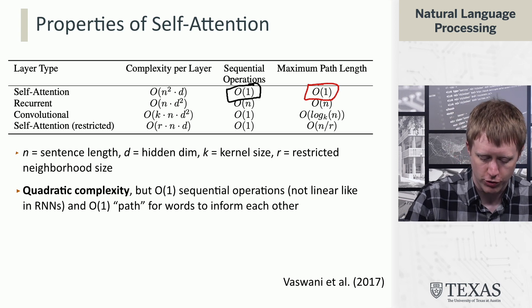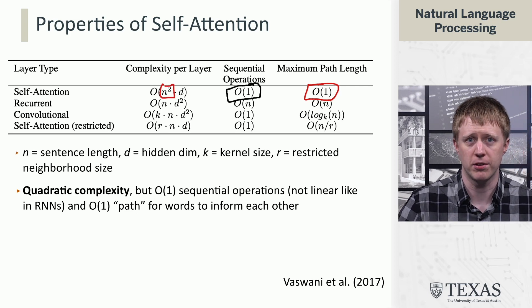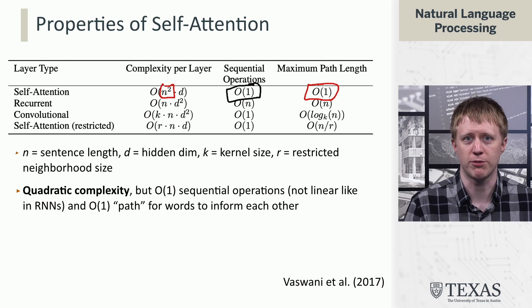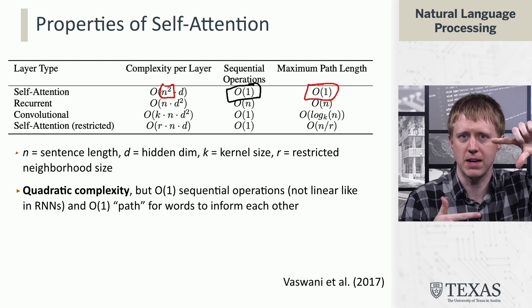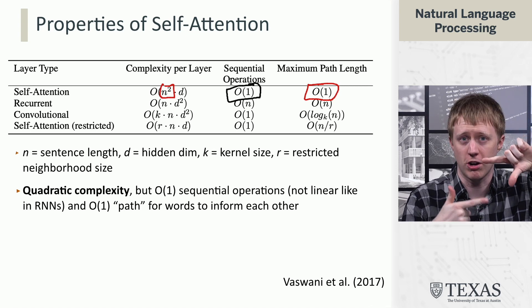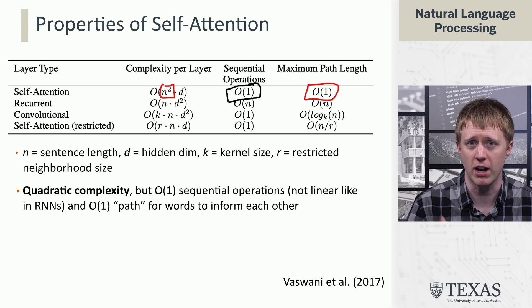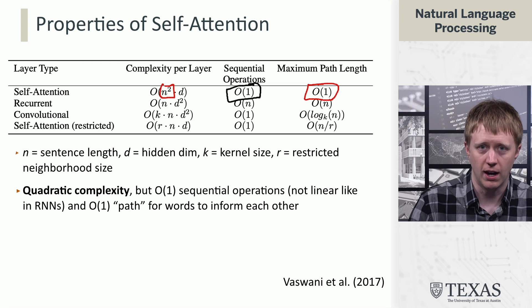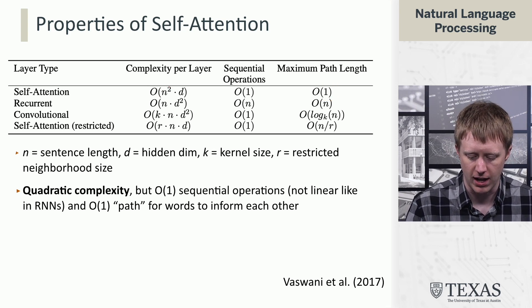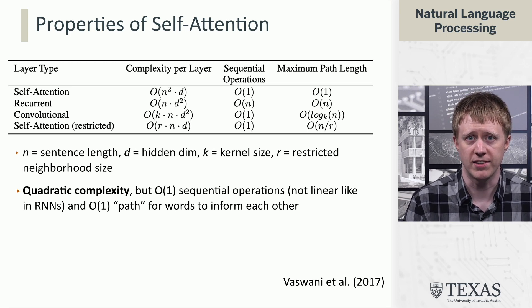That said, the big drawback of self-attention as it's presented here is this n-squared complexity. We have to form this attention matrix that's sequence length by sequence length. That's going to be big, hard to store, a lot of memory. There's a lot of subsequent work that's tried to make this better, and we're going to talk about some of that a little bit later. But that's sort of the one drawback. Other than that, there's a lot of benefits of this architecture compared to others that we've seen. That's the end of this segment.